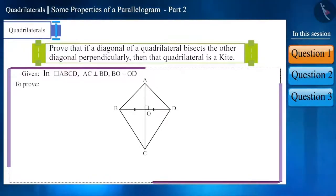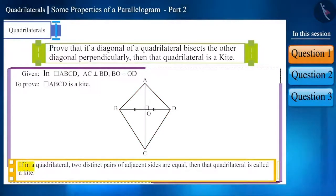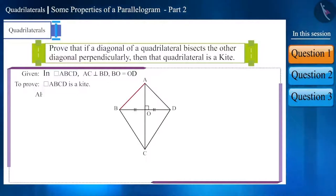We have to prove that quadrilateral ABCD is a kite. If in a quadrilateral, two distinct pairs of adjacent sides are equal, then that quadrilateral is called a kite. So, if we prove that side AB is equal to side AD and side CD is equal to side BC, then it will be a kite.